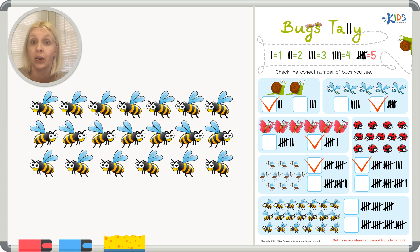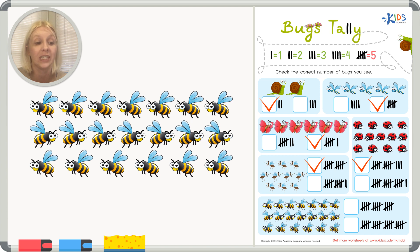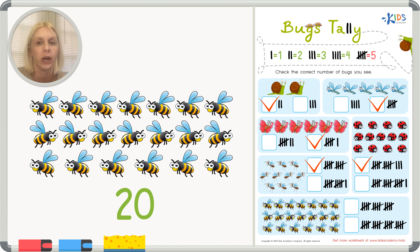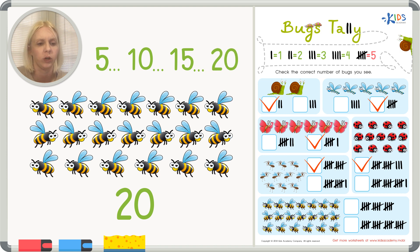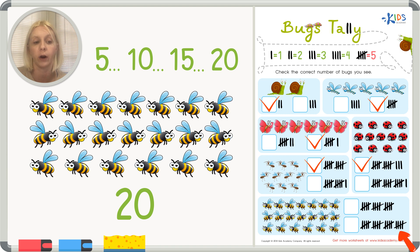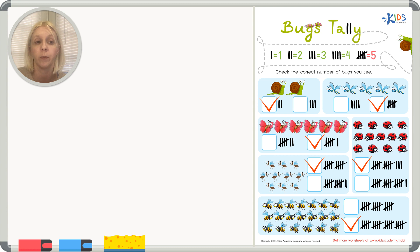We've got so many bumblebees! Count with me: one through twenty. I've got twenty bees. How many groups of five is that? Let's count by fives: five, ten, fifteen, twenty — that's four groups of five. Let's check the answers: one option has three groups of five, which is fifteen — not enough. The other has four groups: five, ten, fifteen, twenty — there it is! Four groups of five is what we needed.